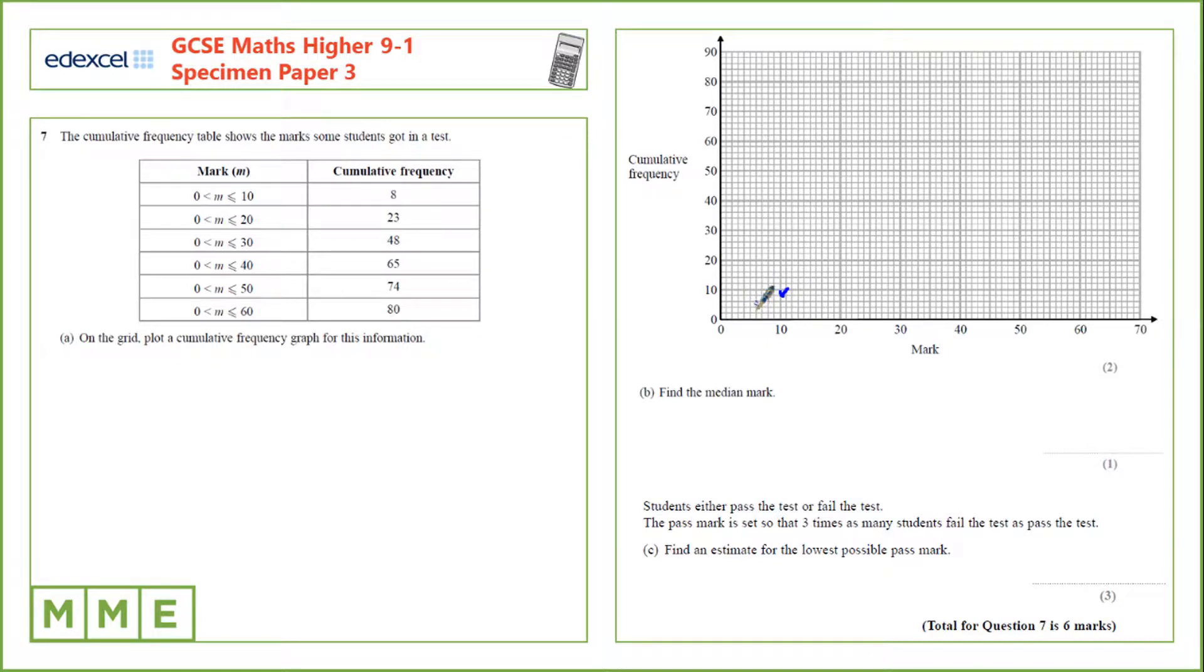Now we need to plot the rest of the points and then join them with a smooth curve. Notice that we've joined up to the origin here because we know that zero is included in this group and we stop at 60. And this is the highest mark, 60, which should match up to the highest frequency, 80.